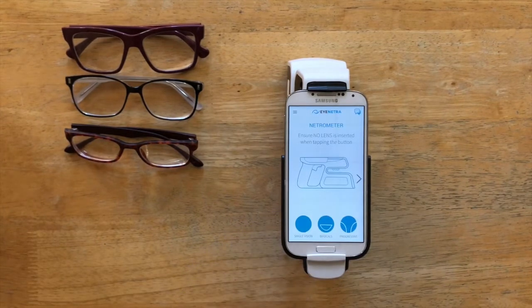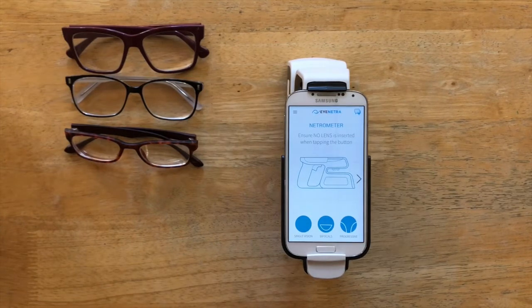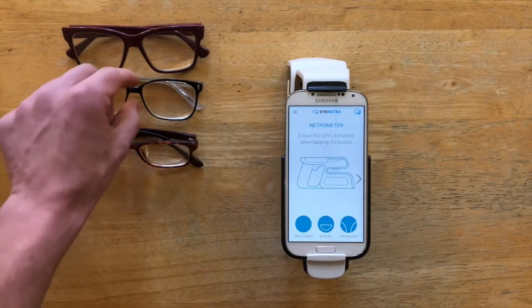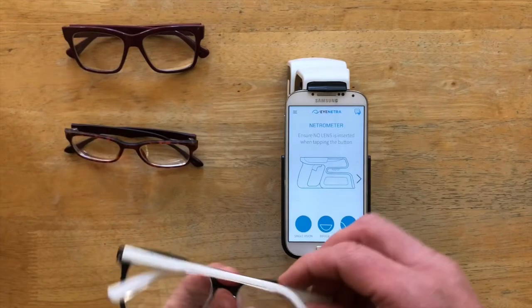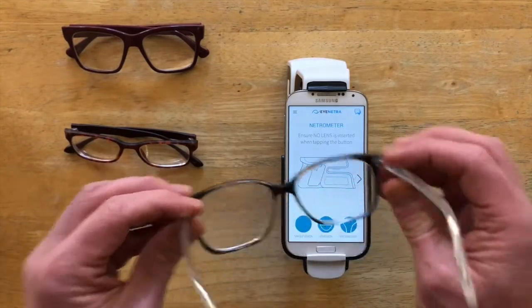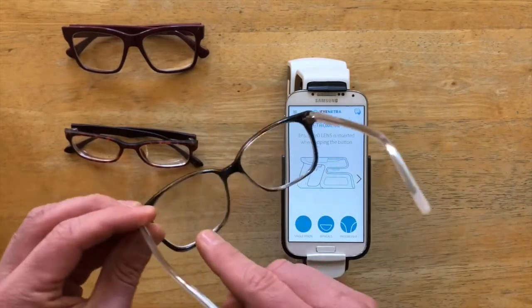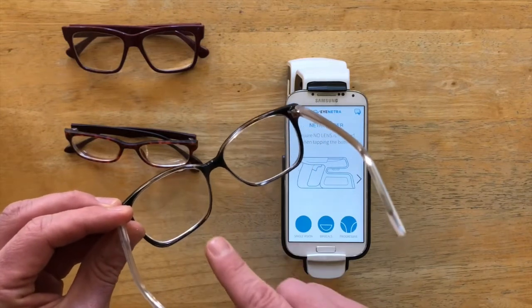Now with bifocals and progressives, the process is pretty similar. There's just two readings per lens instead of one. And the most important thing with multifocals is you just want to make sure you're reading the appropriate region of the lens. So we're always going to read the distance portion first, and then the add value.